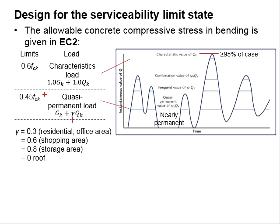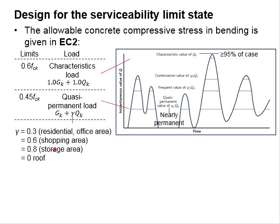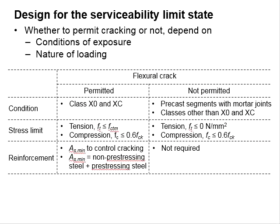While determining the quasi-permanent load, the factor psi is applied to QK. For residential and office areas, the factor is equal to 0.3. For shopping areas, it is 0.6. For storage areas, it is 0.8. And for the roof, it is equal to 0.